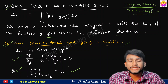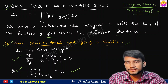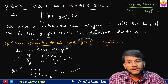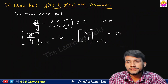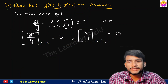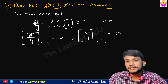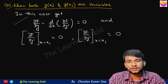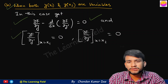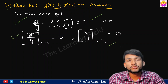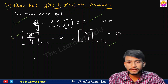So if y(x1) is fixed and y(x2) is variable or free, then ∂f/∂y' at the free point equals zero. The second case is when both y(x1) and y(x2) are variable — that is, both ends are free or arbitrary. Then we get the Euler-Lagrange equation ∂f/∂y − d/dx(∂f/∂y') = 0, with ∂f/∂y' at x = x1 equal to zero and ∂f/∂y' at x = x2 also equal to zero. That is, at both end points the value of ∂f/∂y' vanishes.